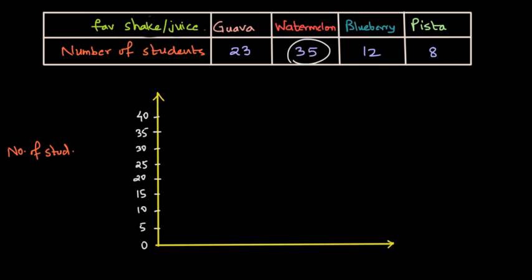And now let's write the different shakes or juices. This is for guava. Then we will have a space for watermelon. Let me make it a little red. I'll just write watermelon. Then we will have blueberry. Let's write blueberry. I'll just write blue and then pista with this pista color.